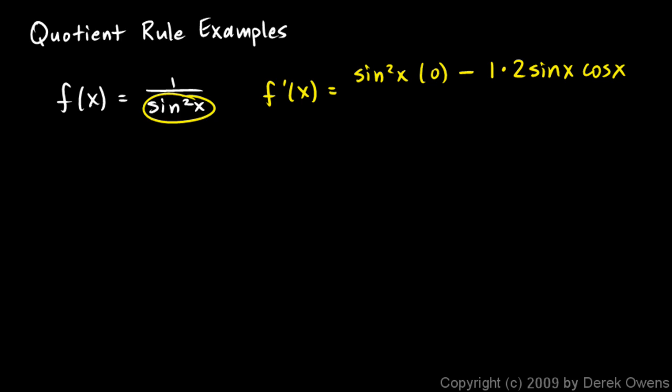Remember, sine squared x is sine x squared, so our outer function is the squared, so we apply the power rule, and we get 2 times the inner function to the first, and then the derivative of the inner function is the cosine of x. And then all of this over the denominator squared, so sine squared x squared is sine to the fourth x.